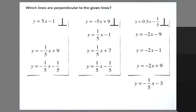All lines that have slope -1/5 are perpendicular to the line with slope 5. You change the sign from positive to negative and flip the fraction to make -1/5.